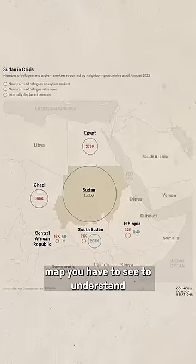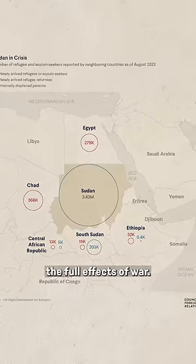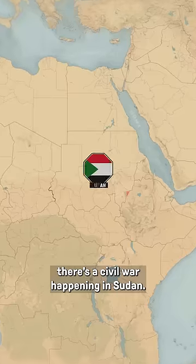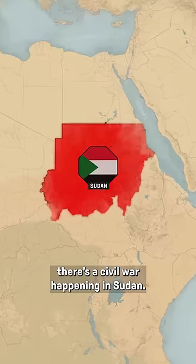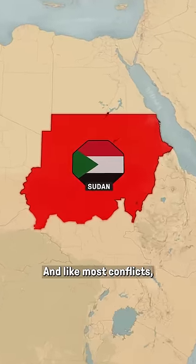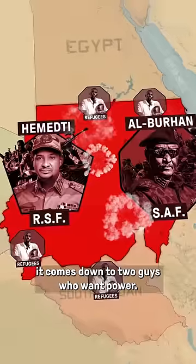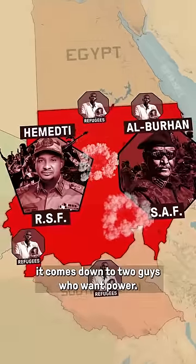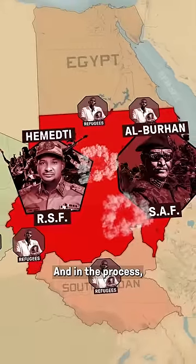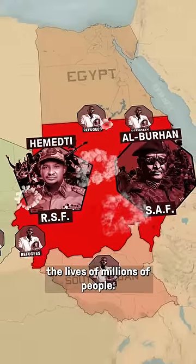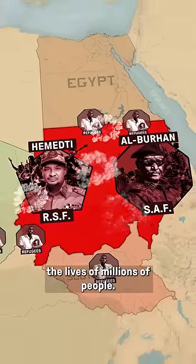There's this one map you have to see to understand the full effects of war. Right now, there's a civil war happening in Sudan, and like most conflicts, it comes down to two guys who want power. And in the process, they're willing to disrupt the lives of millions of people.